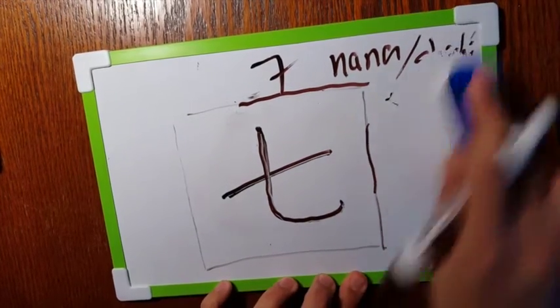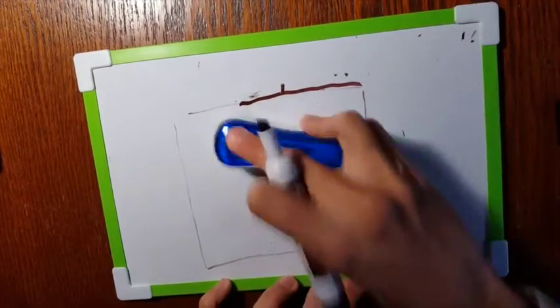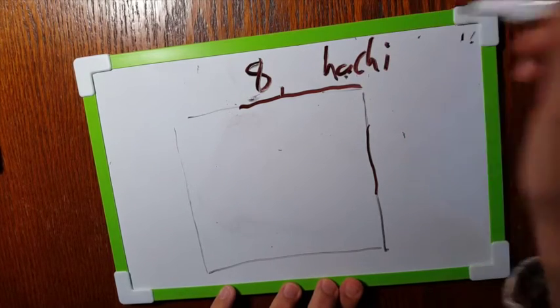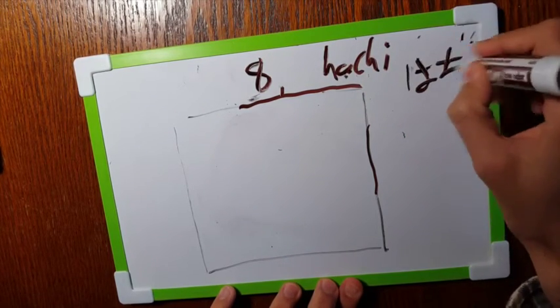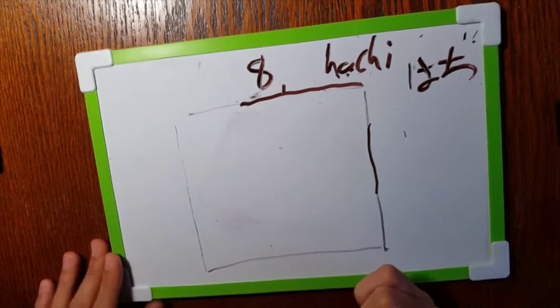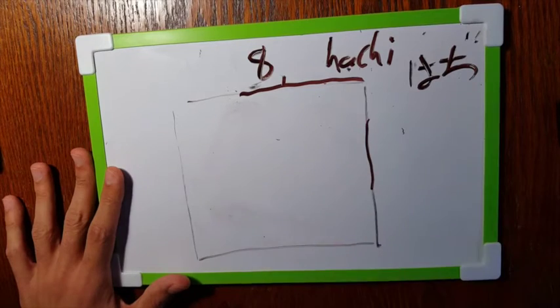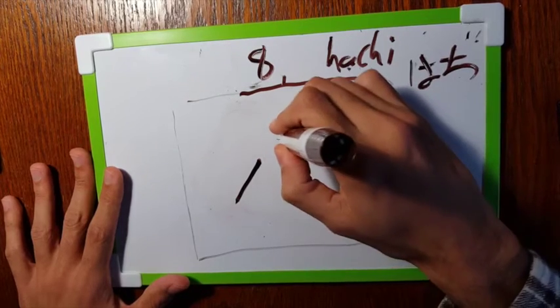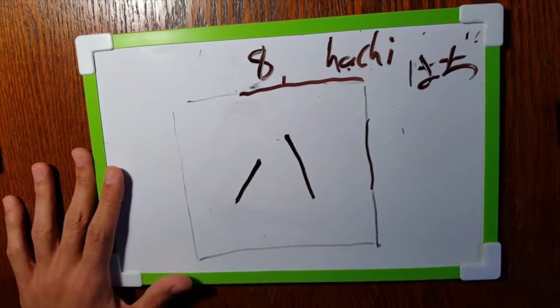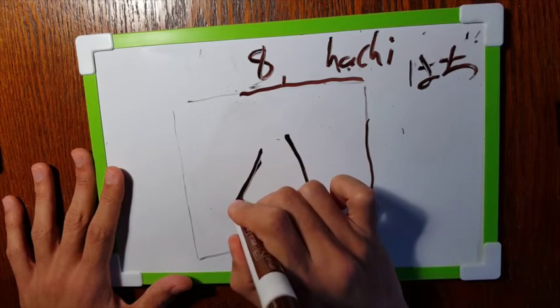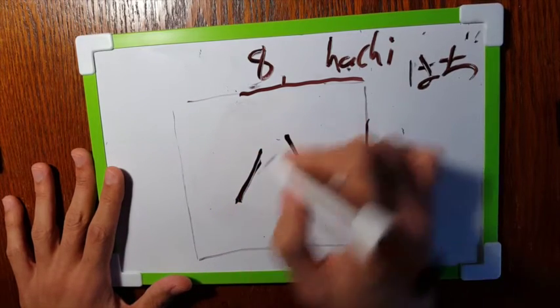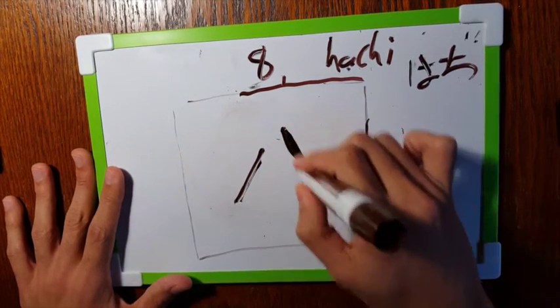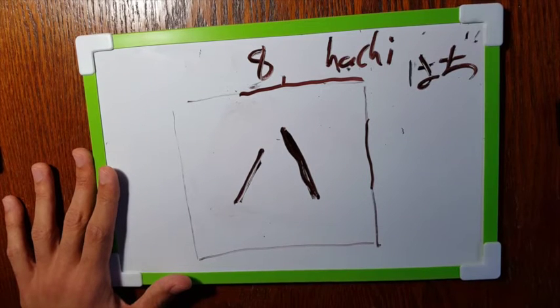Number eight, hachi. This one is just two strokes, kind of like tilted vertical lines. One, two. One starting from left top to bottom, now the next one, two. Hachi, got it?